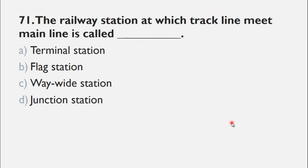MCQ number 71 is: The railway station at which track lines meet the main line is called ___. A) terminal station, B) flag station, C) wayside station, and D) junction station. So the right choice for this question is D, junction station.